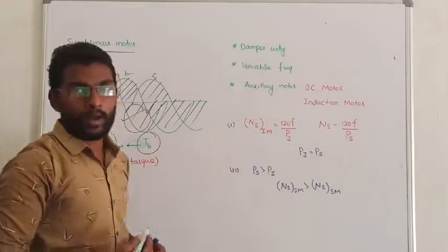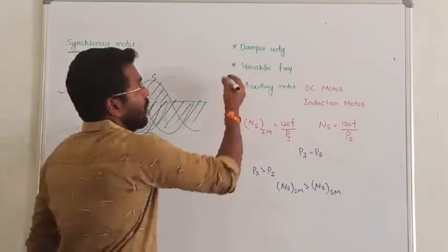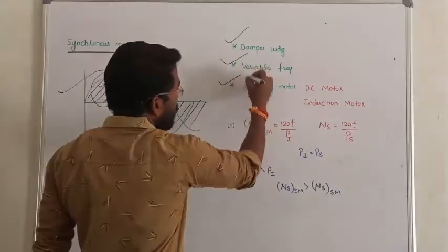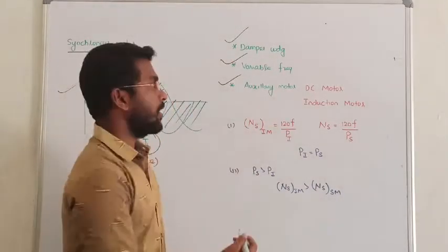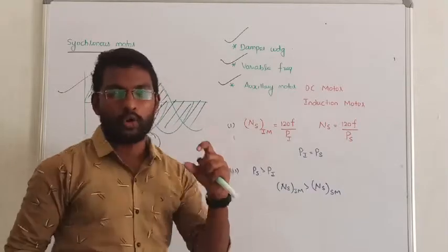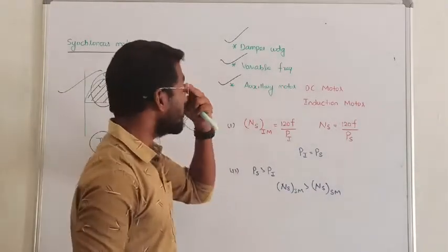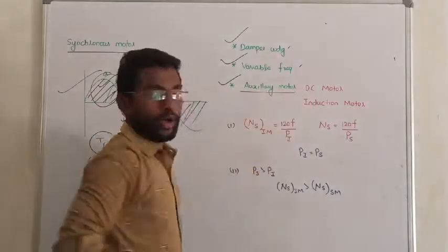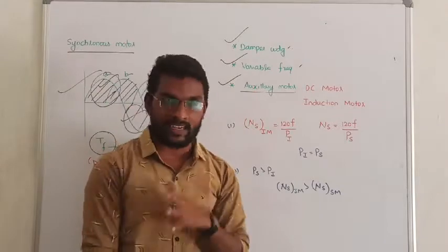To overcome this, or to provide the starting torque in the case of self-starting for a synchronous motor, we are using three methods: damper winding, variable frequency method, and auxiliary motor method. The damper winding acts as an induction motor on empty start. The variable frequency method is also used on empty start. There are three methods: damper winding, variable frequency method, and auxiliary motor.